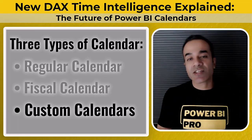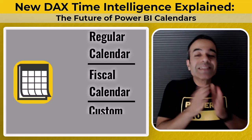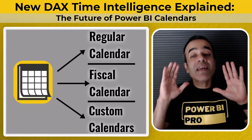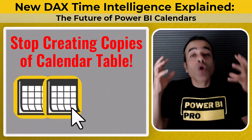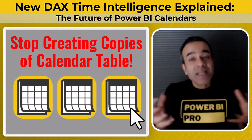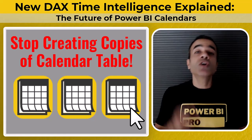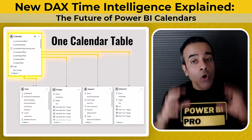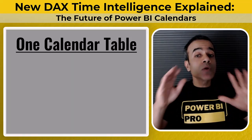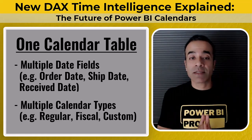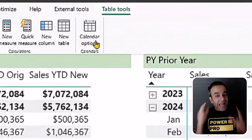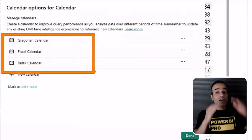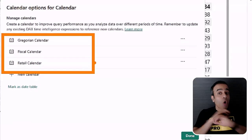Now let's look at the actual feature. What this lets you do is define multiple kinds of calendars within your single calendar table. Please don't create copies of your calendar table — this is one of the biggest mistakes I see Power BI rookies make. You generally only need one calendar table connected to all your data tables, even if you have multiple date fields or multiple calendar types. With this new feature, you can go into calendar options for that one calendar table and define your different calendars within — regular, fiscal, or custom — all in one place.